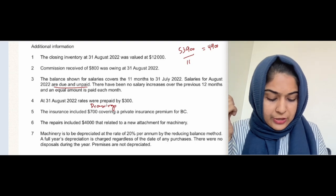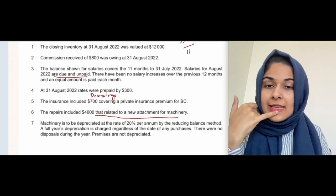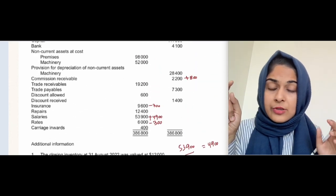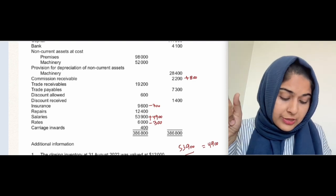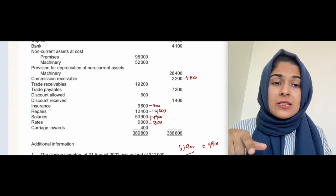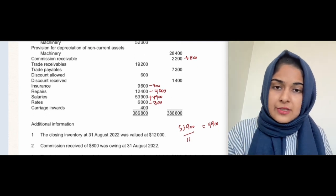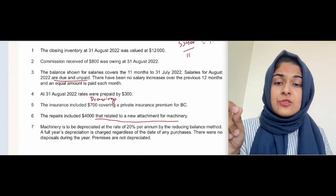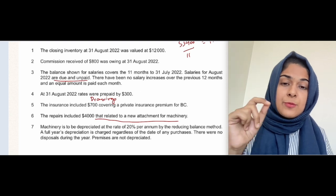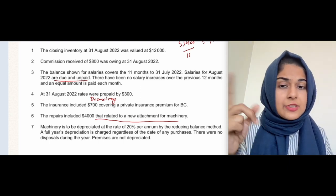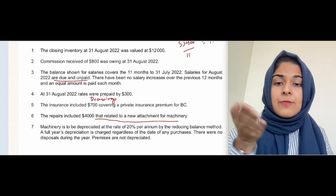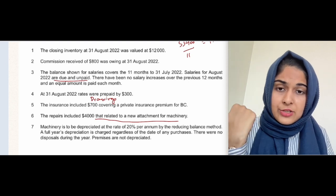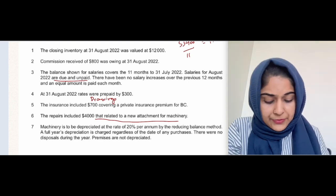The repairs of 4,000 relate to a new attachment for machinery — that is capital expenditure and should not go to the income statement. The total repairs value is 12,400, but 4,000 should not be included because it is not revenue expenditure. Capital expenditure doesn't go to the income statement. A new attachment for machinery is a one-off expenditure that increases the value of the machinery.